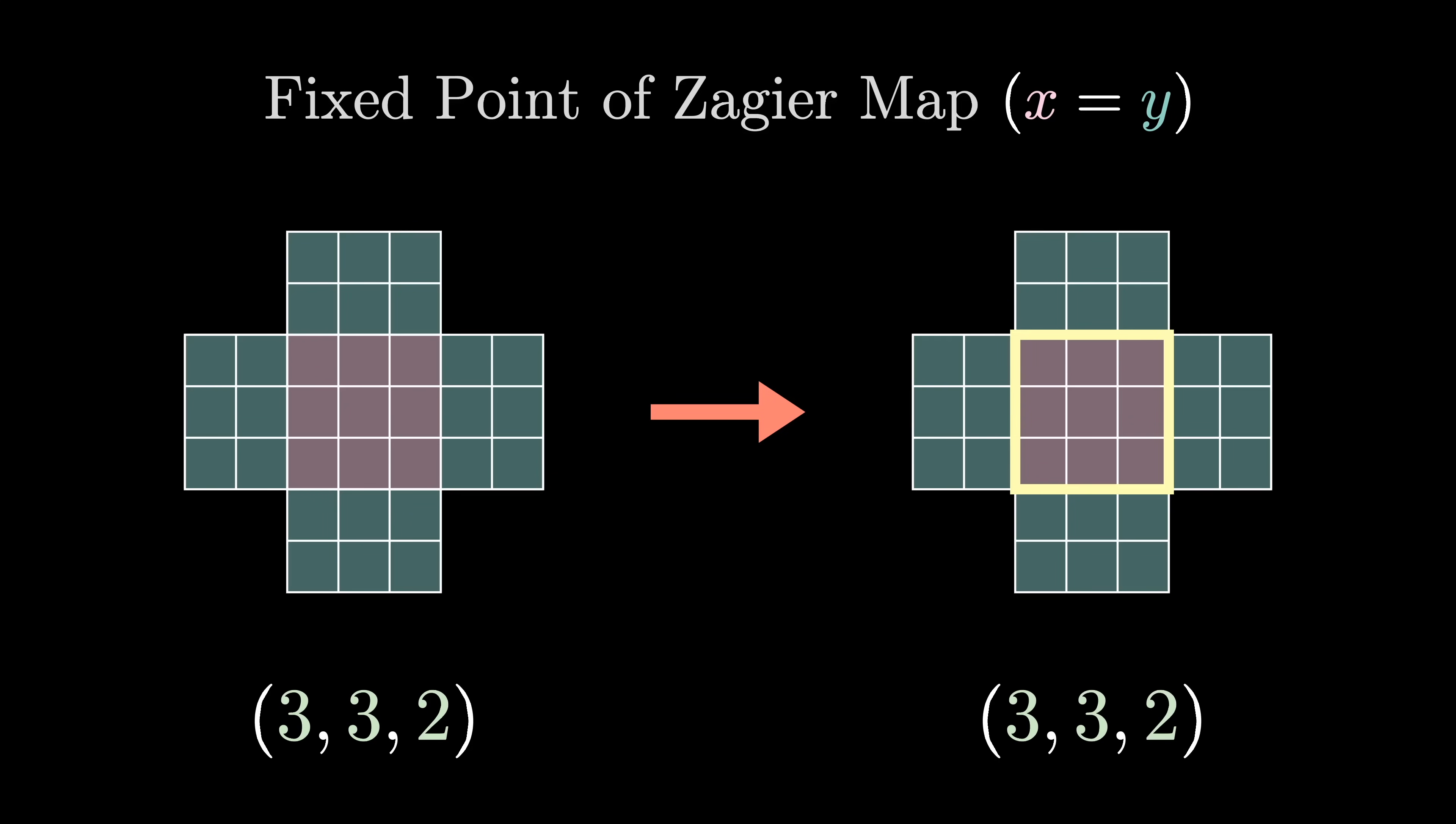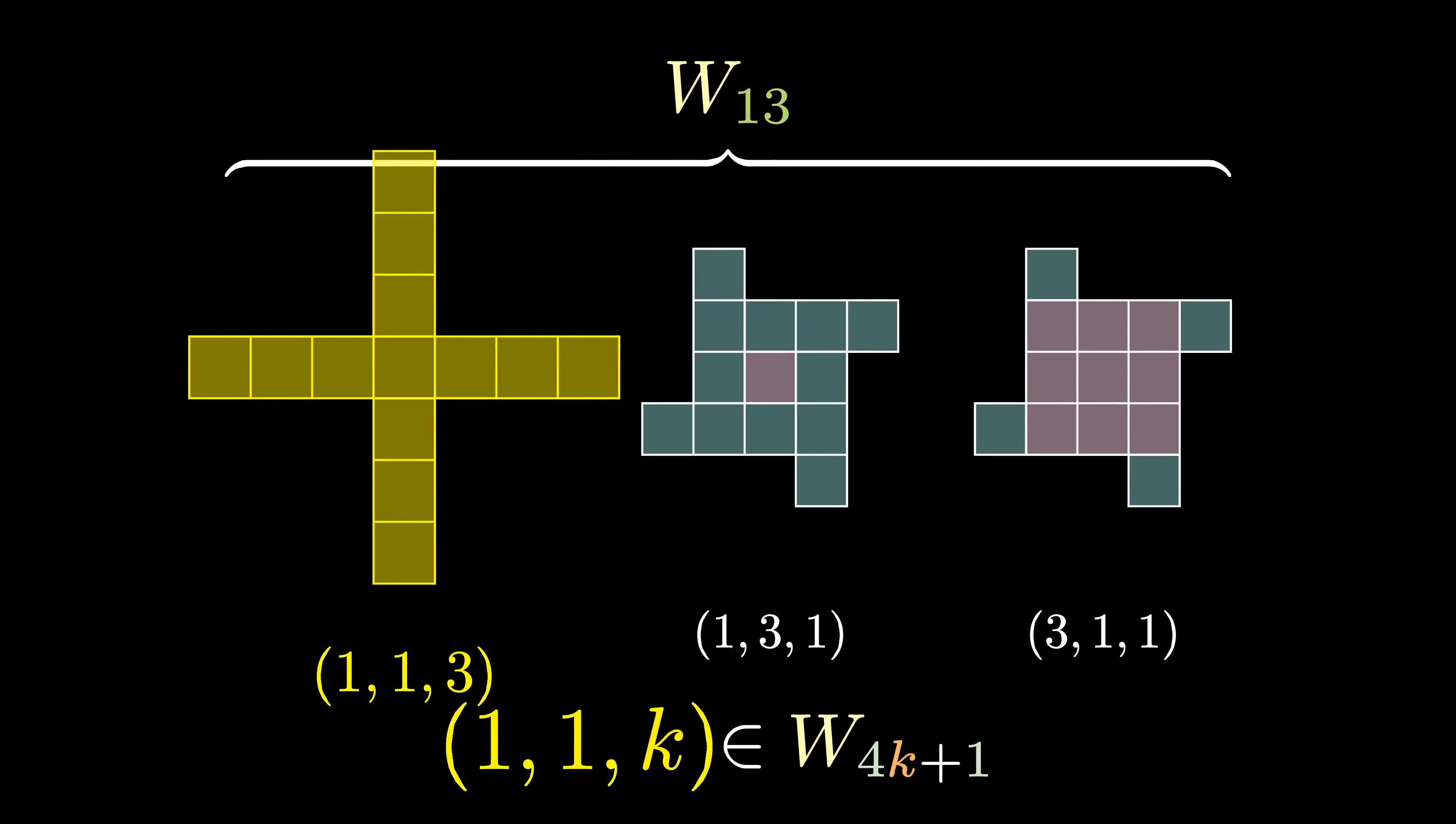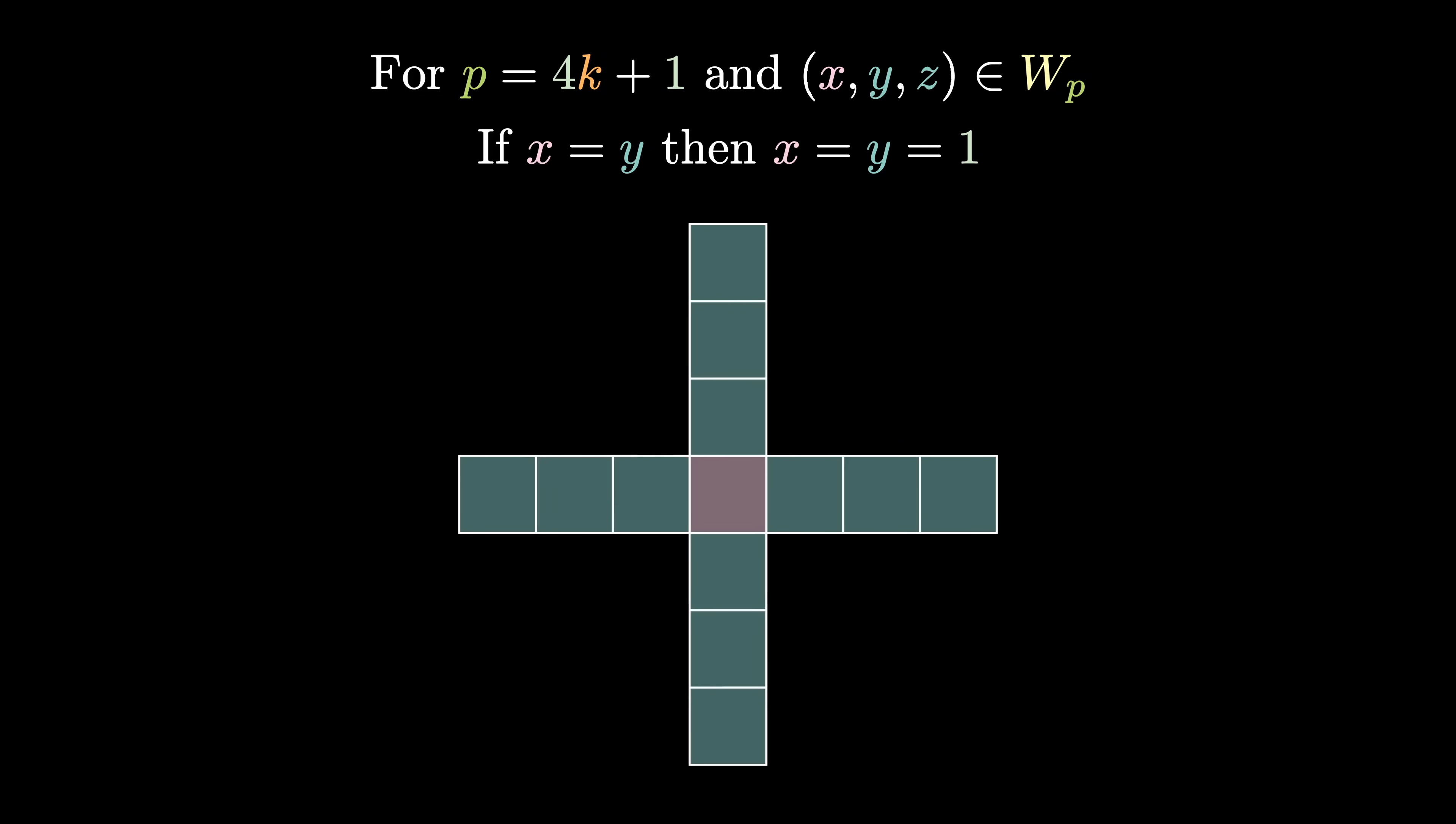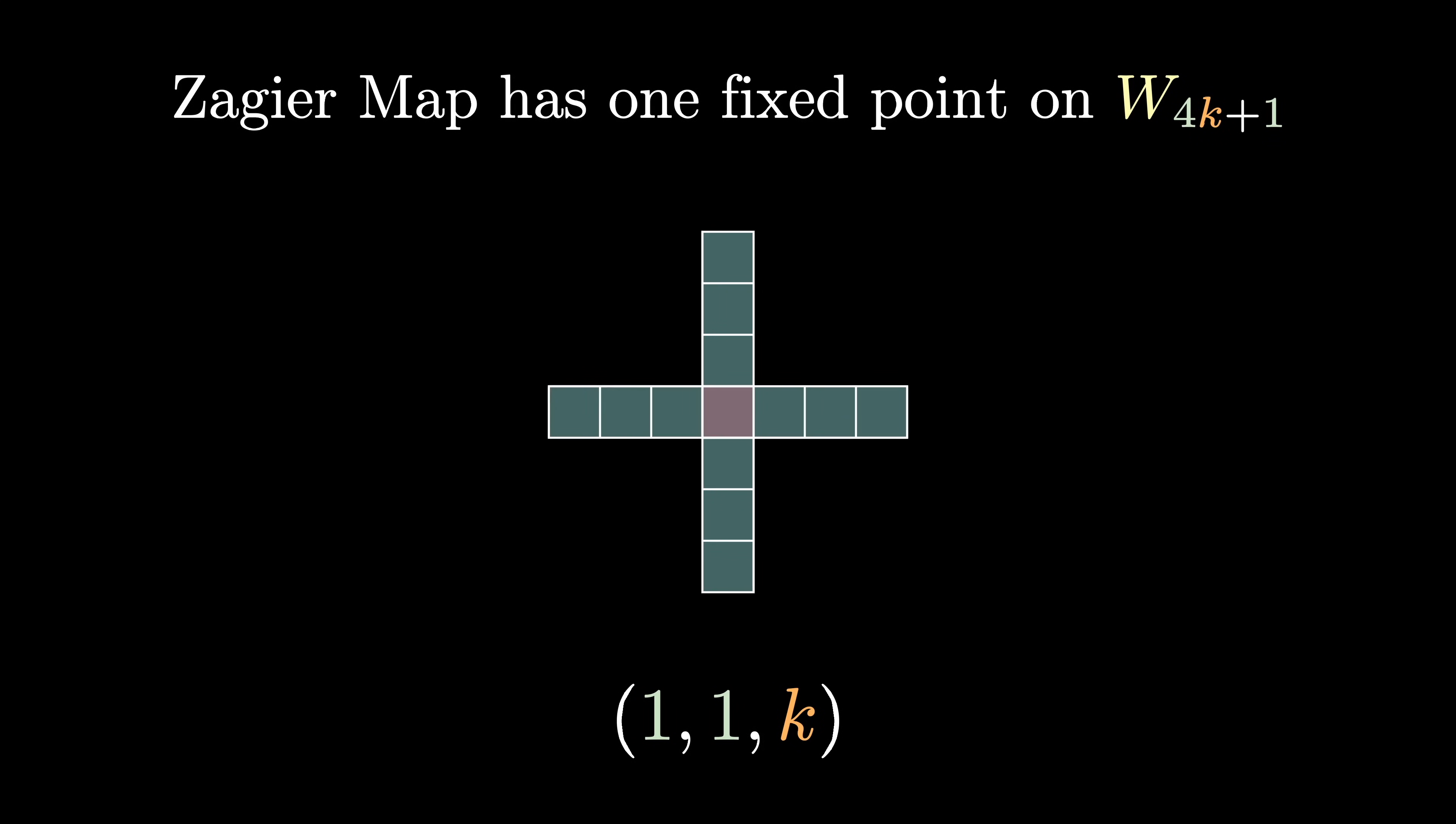We are finally ready to complete the proof. Let's start with the fixed points of the Zagier map, which occur when x = y. When I introduced windmills, I said that (1,1,k) is always a windmill for primes of the form 4k+1. I also said that (1,1,k) is the only windmill of these primes with x = y. This tells us that the Zagier map over primes of the form 4k+1 has one and only one fixed point.